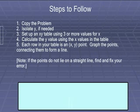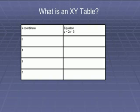So the steps we're going to follow is first we're going to copy the problem down. We're going to isolate the y if needed, so we're going to solve for y. Then we're going to set up an x-y table using three or more values for x. We're going to calculate the value. And then we're going to figure out what the x-y point is and we're going to graph them on the line. So, let's begin.